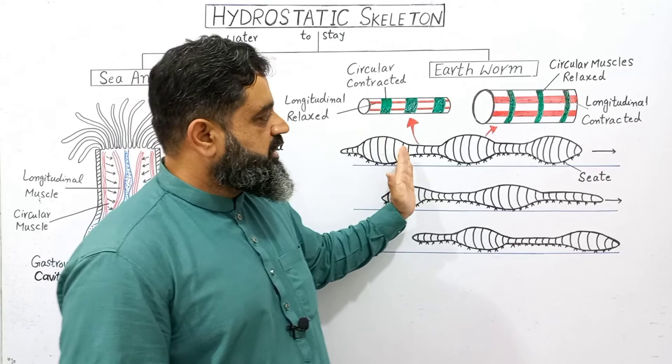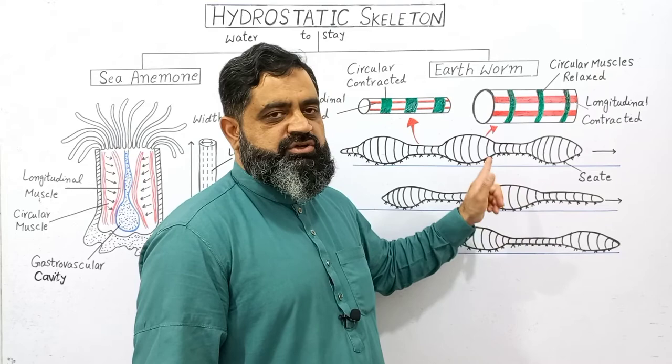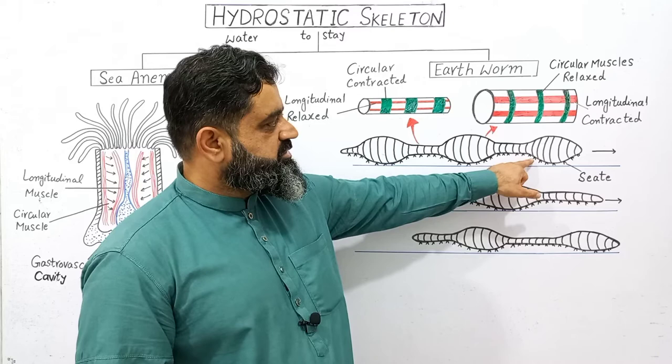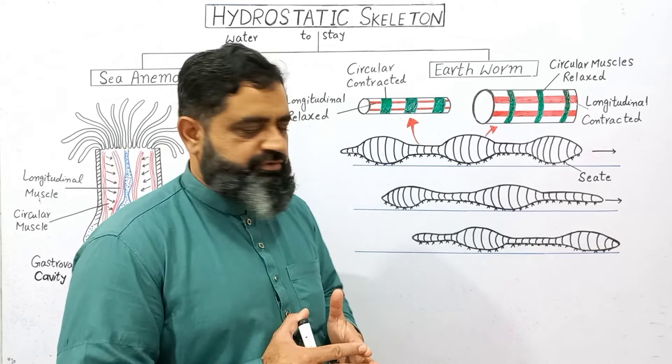As you can see in the next diagram, the animal pushes forward with the help of these contractions. The contractions exert pressure on the fluid, and this pressurized fluid pushes the body toward the forward end. Longitudinal muscles contract and circular muscles relax, then circular muscles contract and longitudinal muscles relax — alternating contraction and relaxation of muscles helps the body push forward.